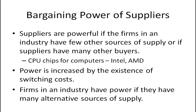Firms in an industry have power if they have many alternative sources of supply. If there are a lot of suppliers — the opposite of the first point — if there are many places where you can get products, for example there are lots of companies that make memory chips, not the CPU chips but the memory chips. Therefore, memory is really a commodity business. Hard drives also have a number of manufacturers. Those kinds of suppliers are not extracting as much of the industry profit out of the PC industry.